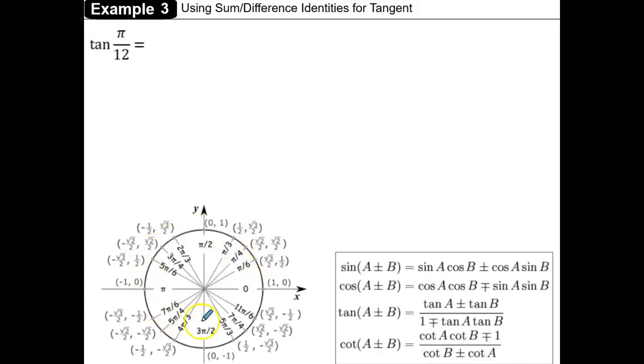If we change our denominators for the special angles in the unit circle to 12s, then pi over 6 would become 2 pi over 12, pi over 4 would be 3 pi over 12, pi over 3 would be 4 pi over 12, pi over 2 would be 6 pi over 12, and so on.